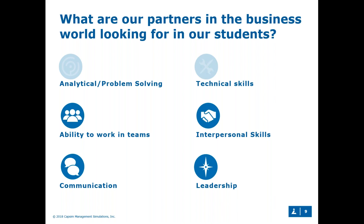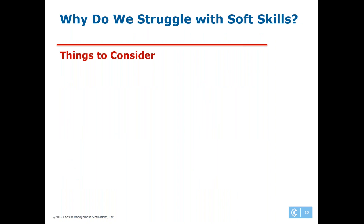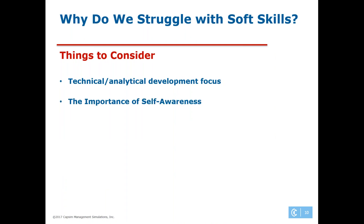Before we get there, I'd like to cover why exactly we sometimes struggle with soft skills. There are three main areas we'll briefly go through: first, our current focus on the technical and analytical development of students; second, the importance of self-awareness and instilling that in students as early as possible; and finally, addressing whether students get soft skill development elsewhere — in higher education, in their career — or whether it's something we don't really need to focus on at the high school or CTE level.